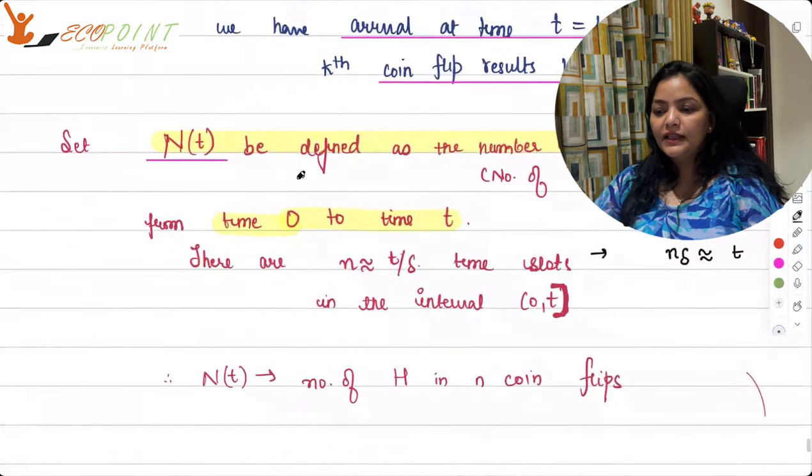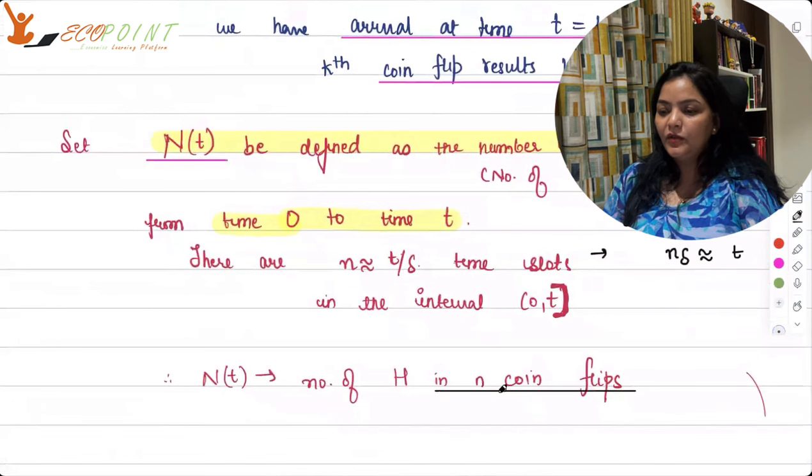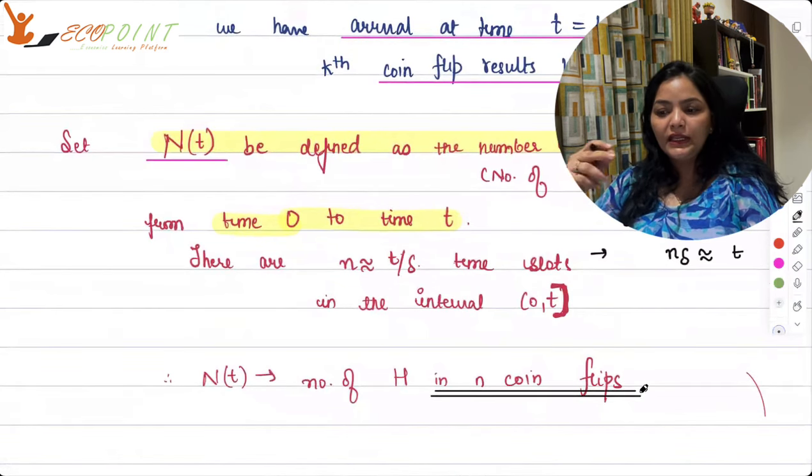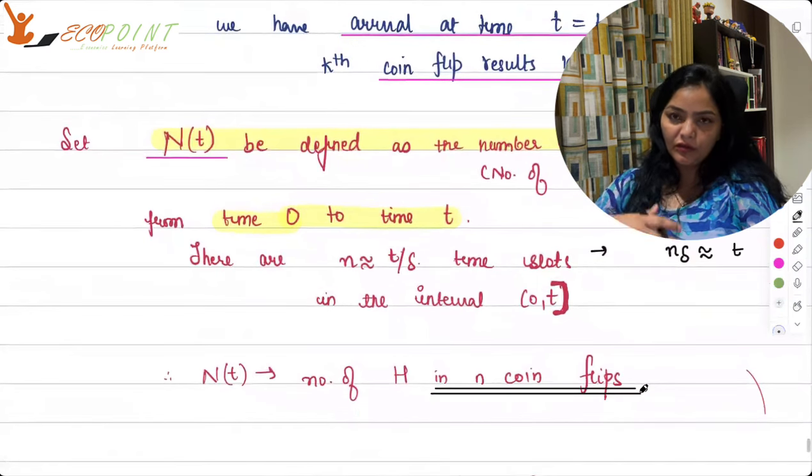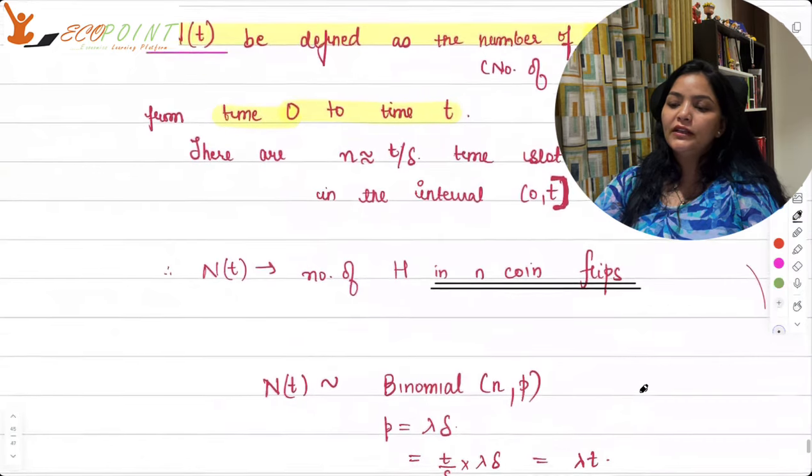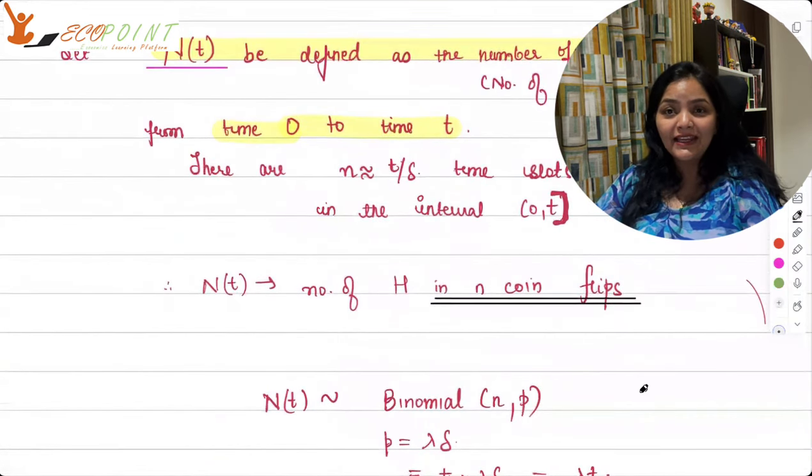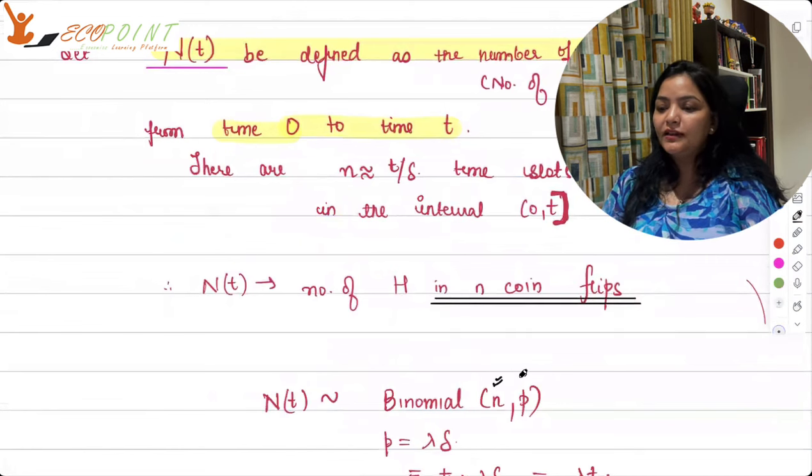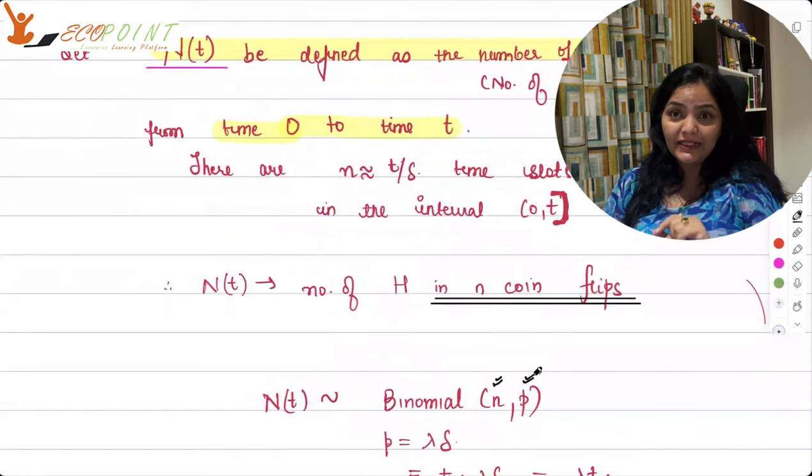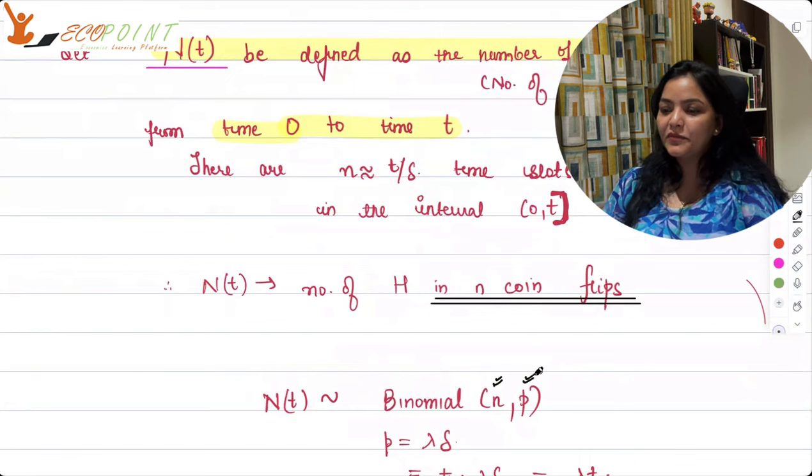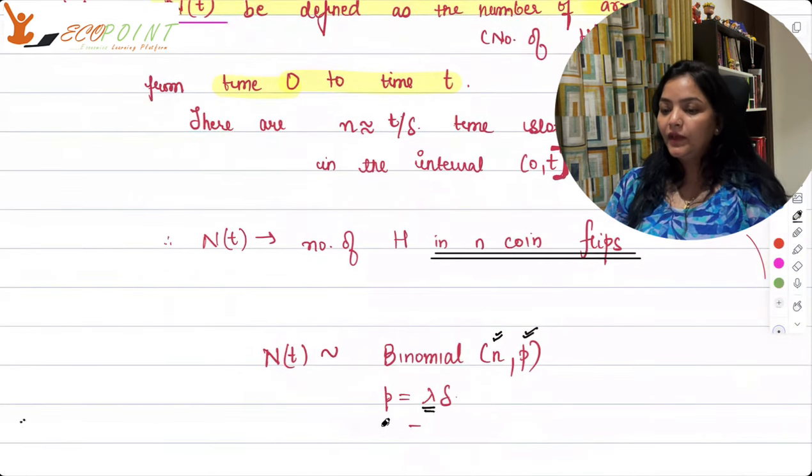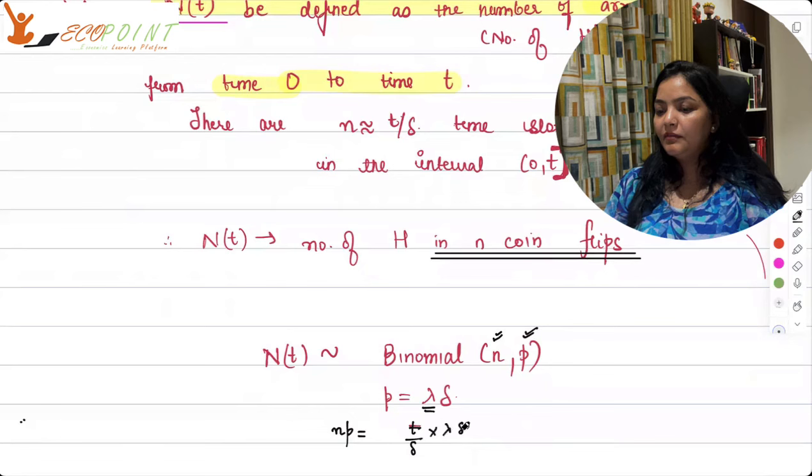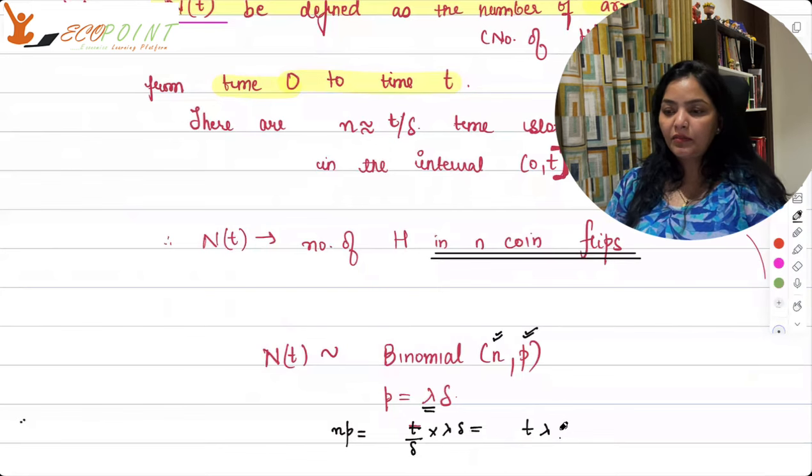So there are n or t upon delta time slots in the interval 0 to t. nt is number of heads in n coin flips basically. The number of successes in n trials is actually binomial, right? With parameters n and probability p, where probability p is your lambda delta. And if you see np, we have taken t upon delta times p lambda delta. So that means np is basically t lambda.